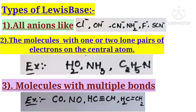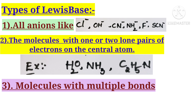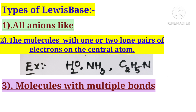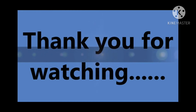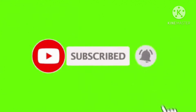And molecules with multiple bonds also act as Lewis bases. For example, CO, NO, HC≡CH, and CH2=CH2. Double bonds and triple bonds are called multiple bonds. Molecules with multiple bonds act as Lewis bases. In this video, we discussed what is Lewis acid, what is Lewis base, and types of Lewis acids and Lewis bases. Thank you for watching. Please subscribe to my channel and click the bell icon for notifications.